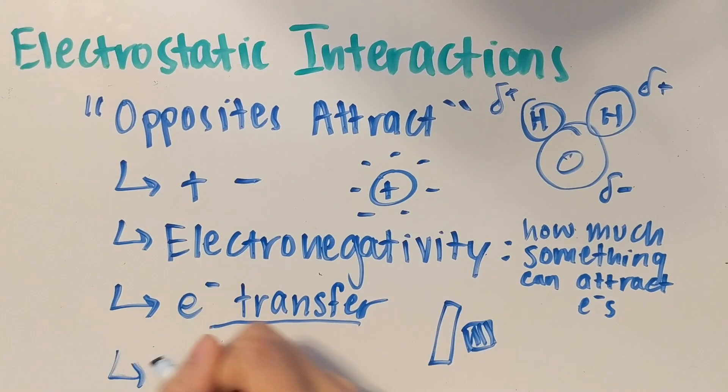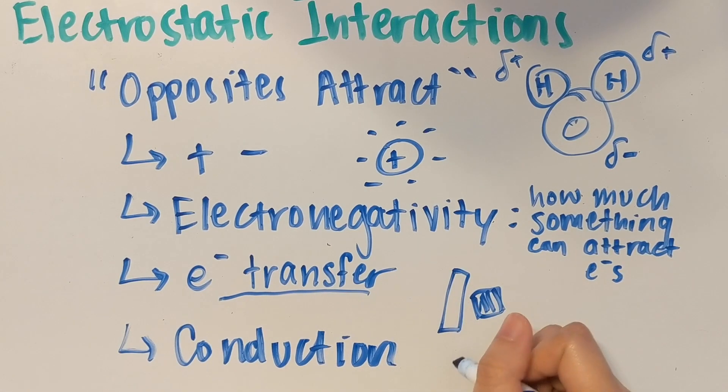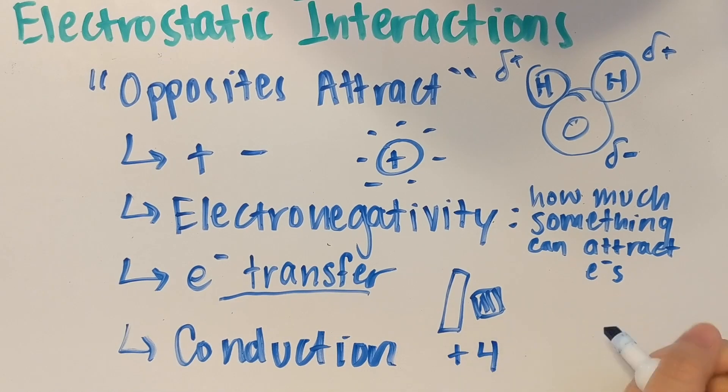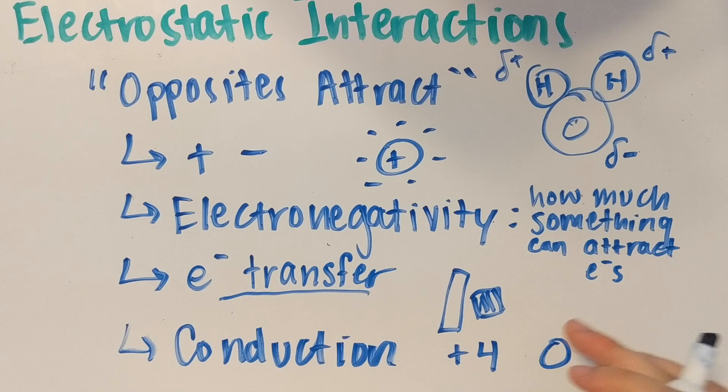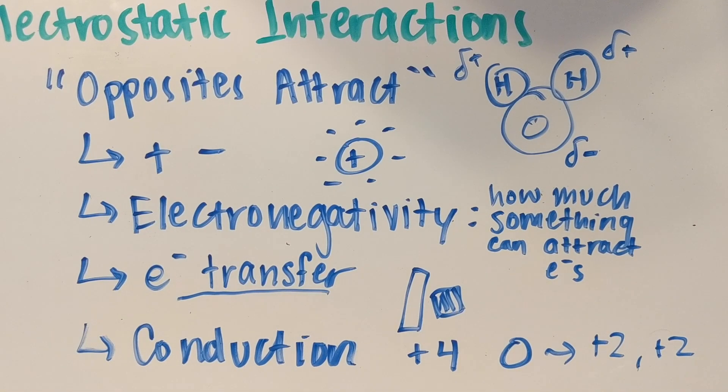And then there's also the concept of conduction. Conduction is basically when you touch a charged object to a neutral object, it'll try to achieve equilibrium by spreading half of its charge to the neutral object. So if I had an object with a charge of plus 4 and a neutral object with charge 0, then equilibrium would look something like positive 2, positive 2. So each object has a charge of positive 2.